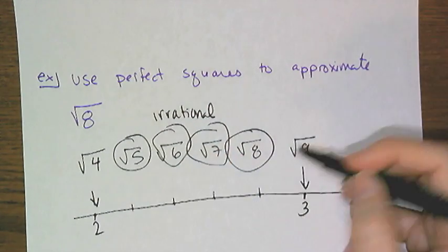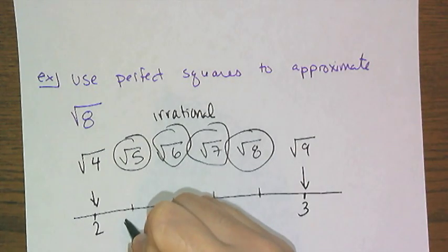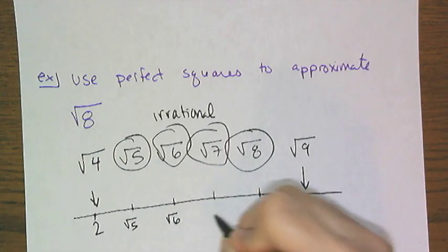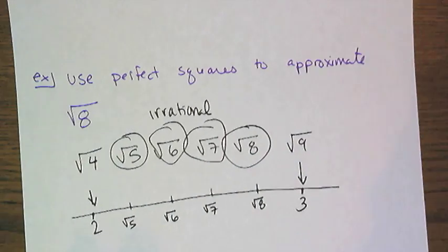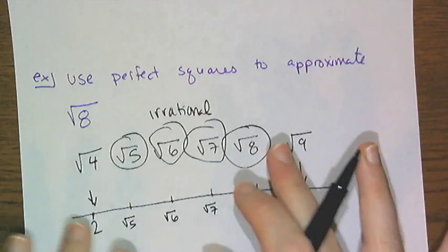So we're gonna look at these in terms of a number line. This is the square root of 4 or 2, this is the square root of 9 or 3, this is gonna be the square root of 5, this is gonna be the square root of 6, this is gonna be the square root of 7, this is gonna be the square root of 8. They're not actually equally spaced out, but they're kind of close to those locations.